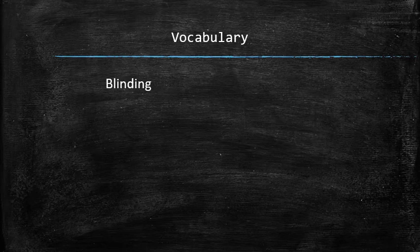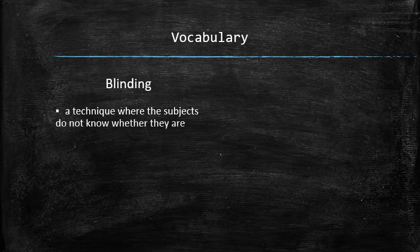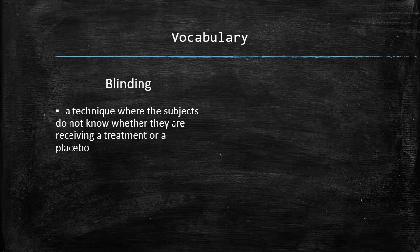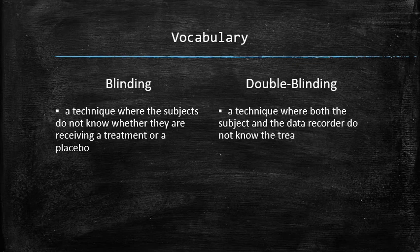Blinding: a technique where the subjects do not know whether they are receiving a treatment or placebo. Double blinding: a technique where both the subject and the data recorder do not know the treatment.